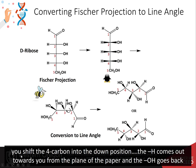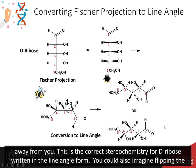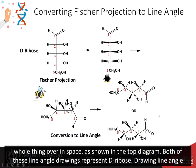The same thing occurs when you shift the 4 carbon into the down position. The H comes out towards you from the plane of the paper, and the OH goes back away from you. This is the correct stereochemistry for D-ribose written in the line angle form. You can also imagine flipping this whole thing over in space as shown in the top diagram. Both of these line angle drawings represent D-ribose.